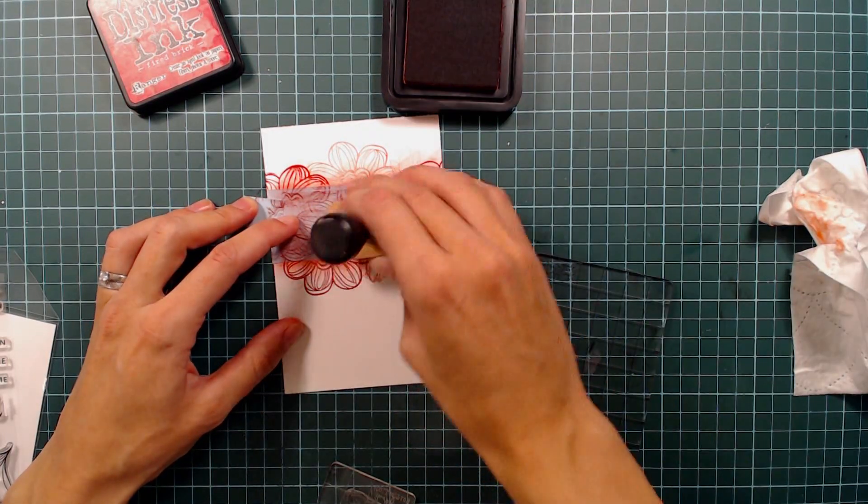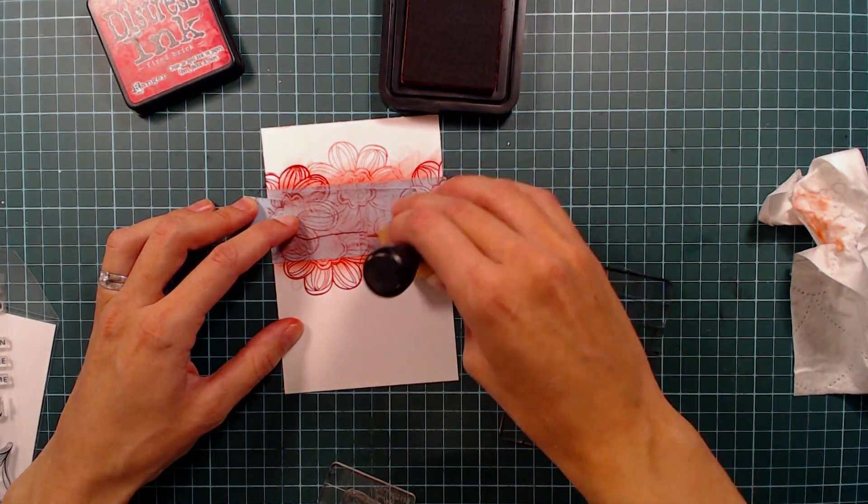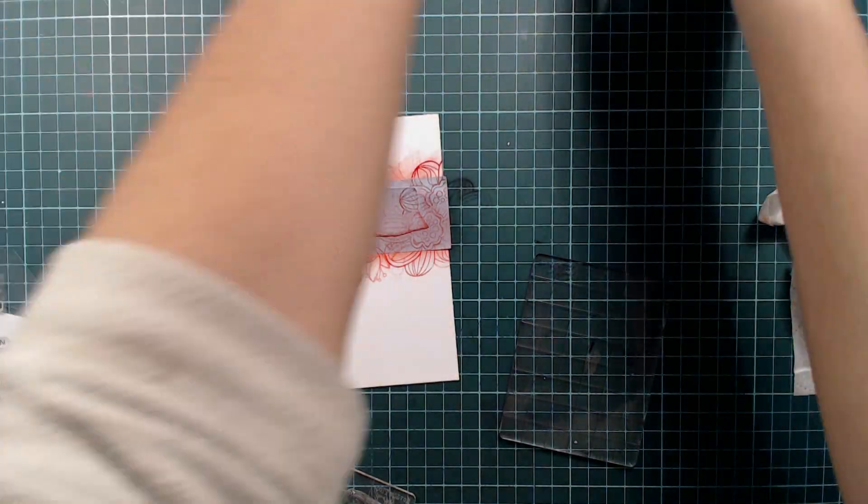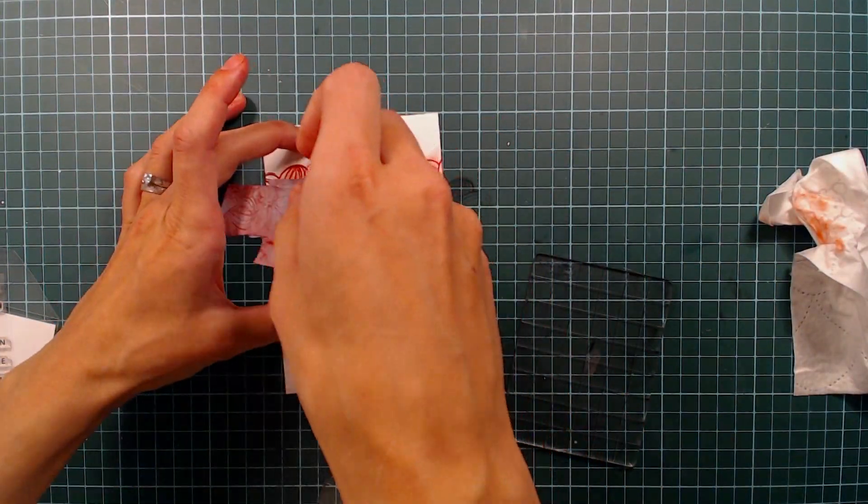And I'm doing a little bit of blending here by using the lighter colors first, and then I'm just adding the darkest color closest to the edge.